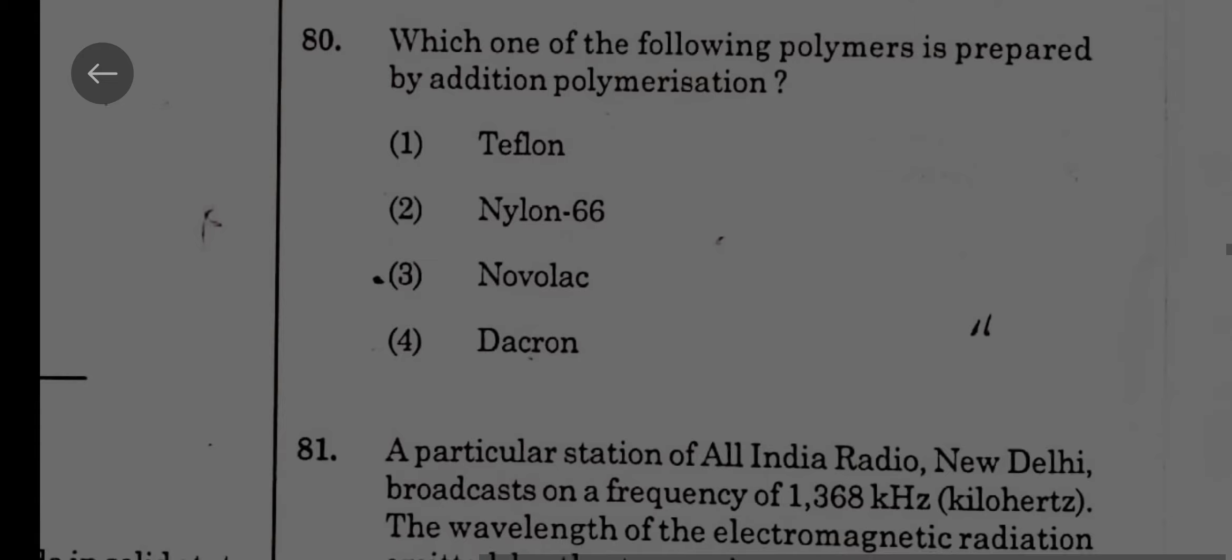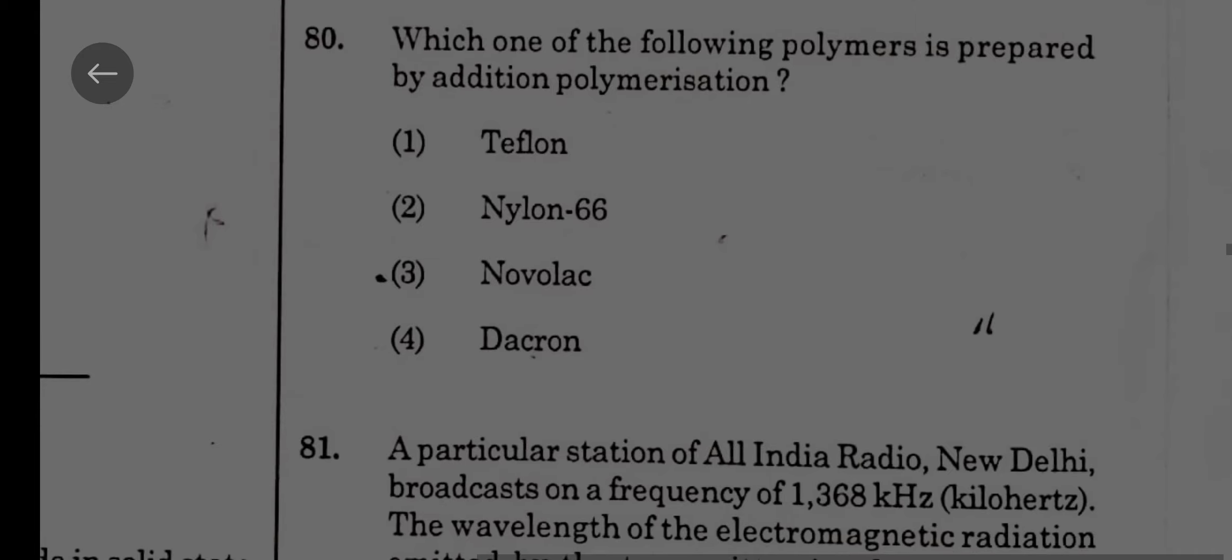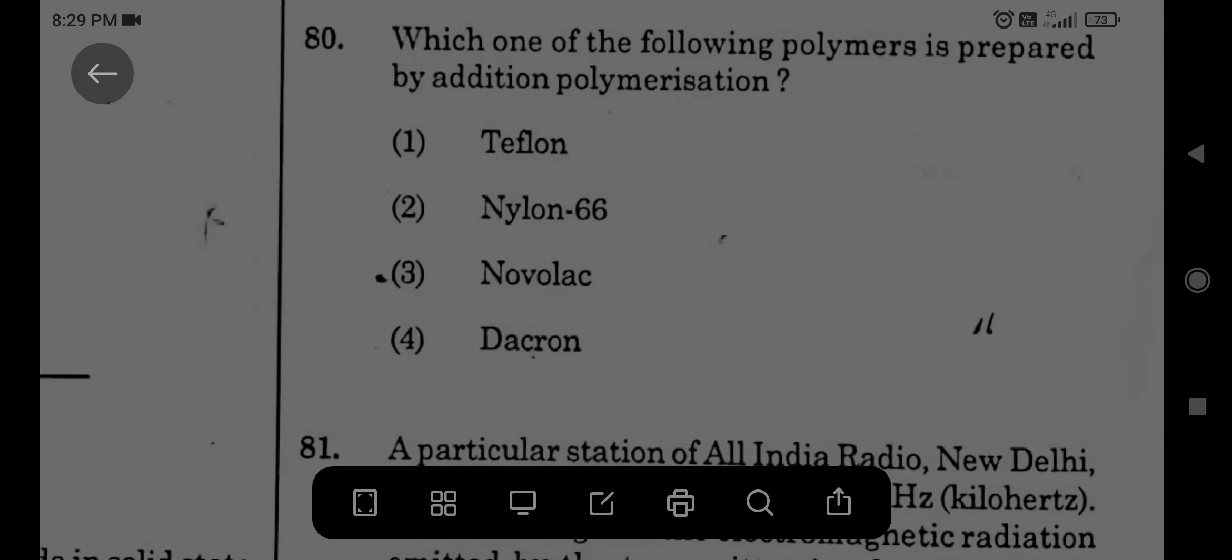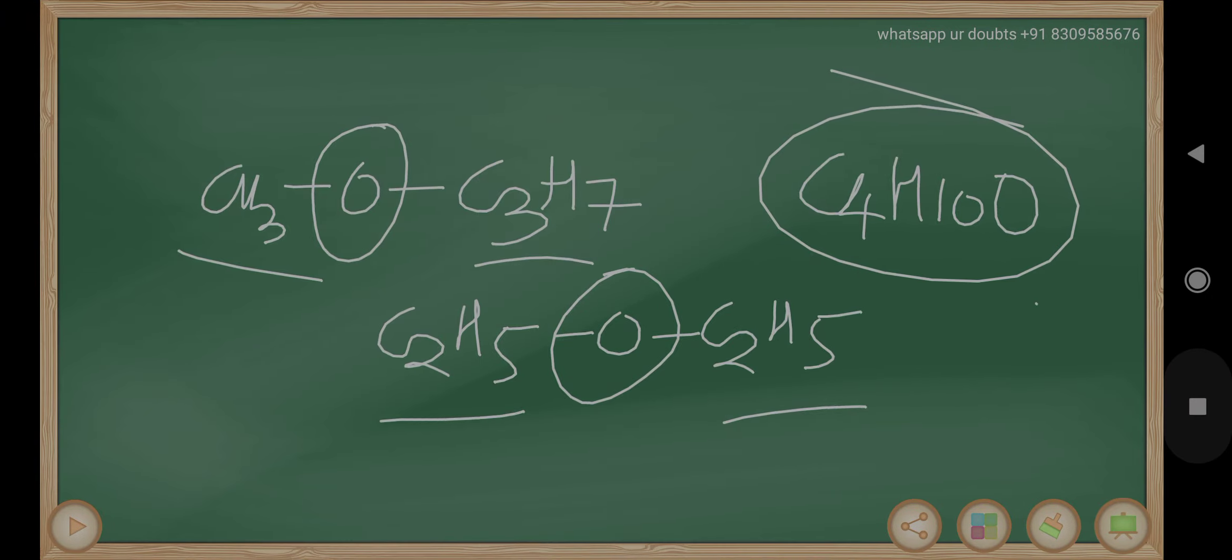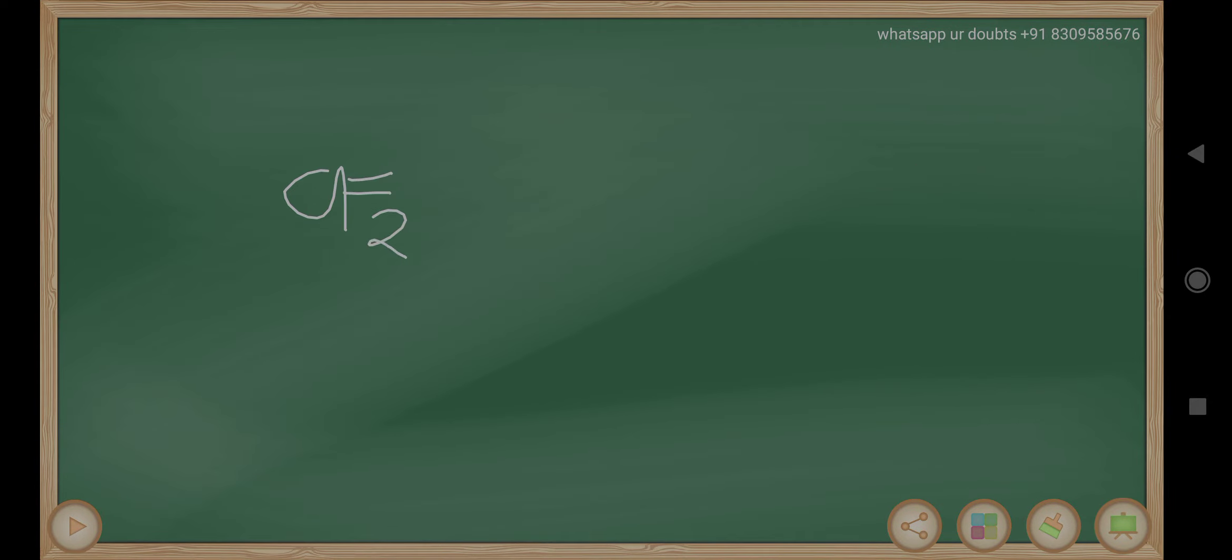Which one of the following polymers is prepared by addition polymerization? That is Teflon, CF2. CF2 double bond CF2, this gives you CF2 single bond CF2. It is Teflon addition polymerization.